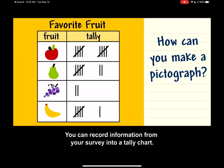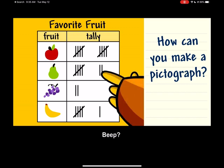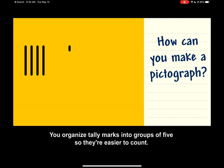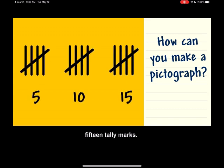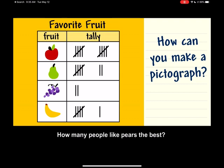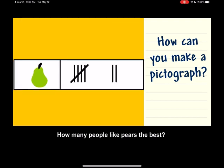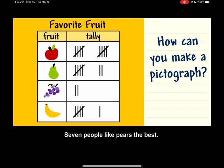A survey is a list of questions used to collect information or opinions. You like bananas the best. So do a lot of other kids. You can record information from your survey into a tally chart. You organize tally marks into groups of five so they're easier to count. There are five, ten, fifteen tally marks.